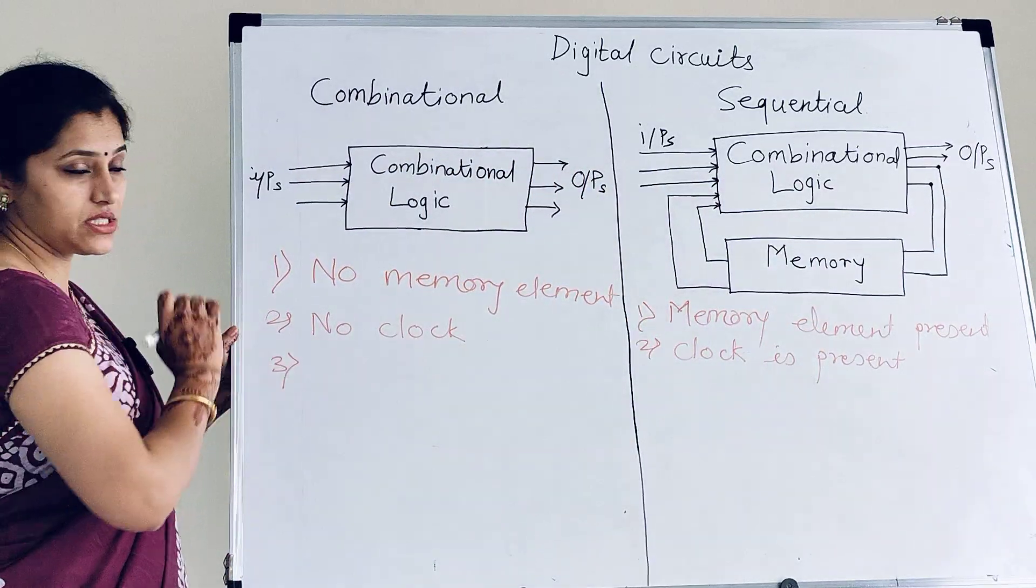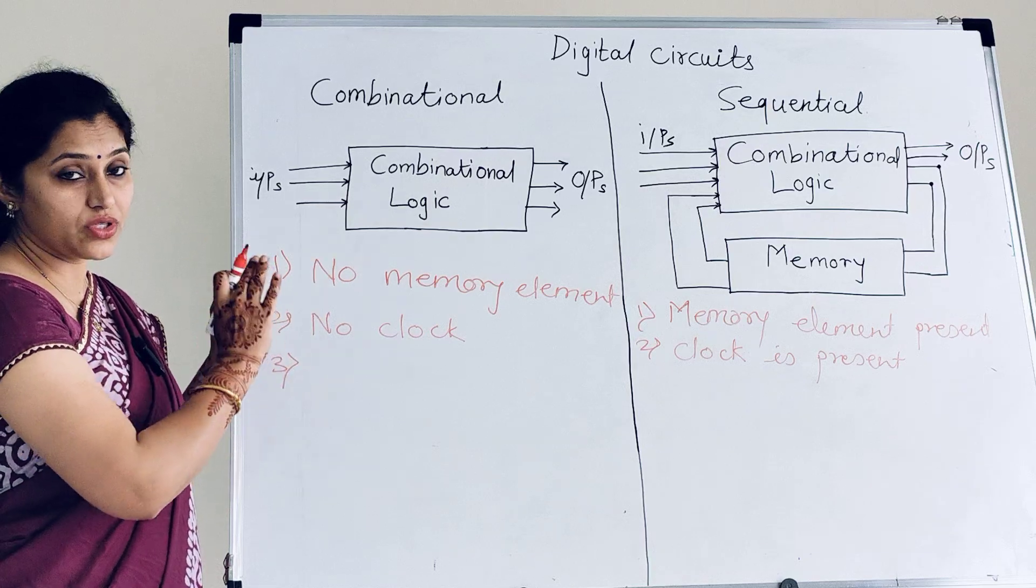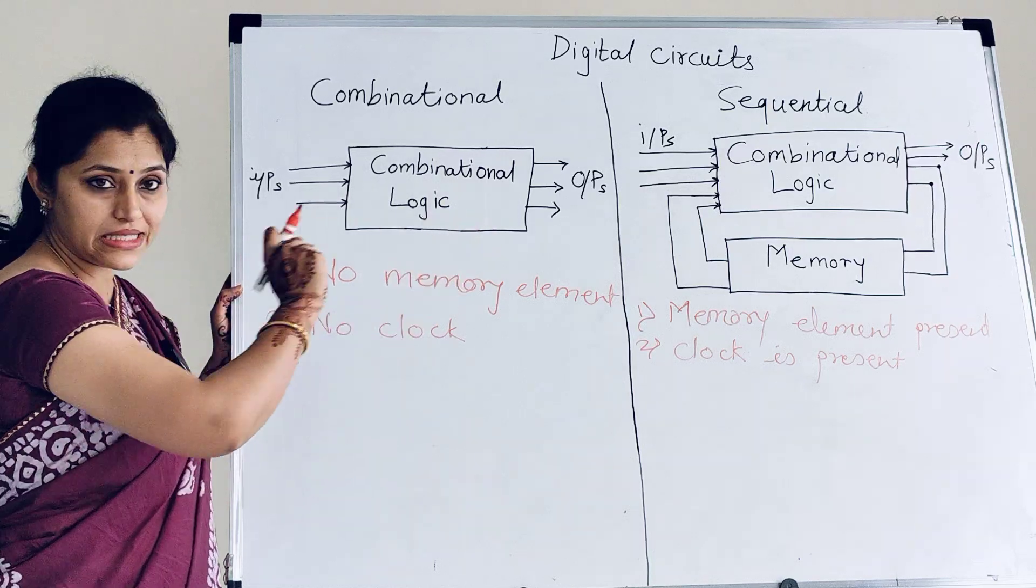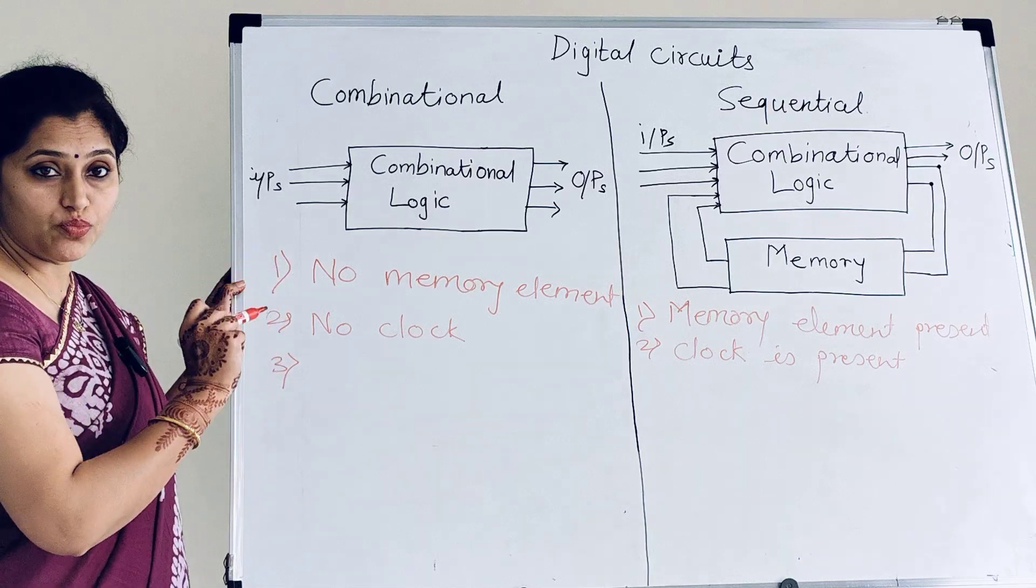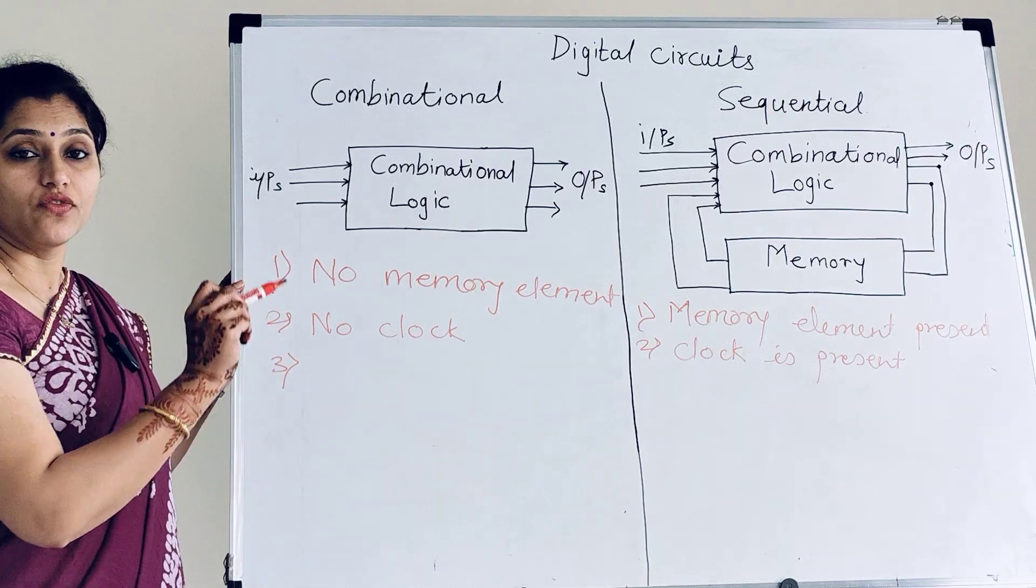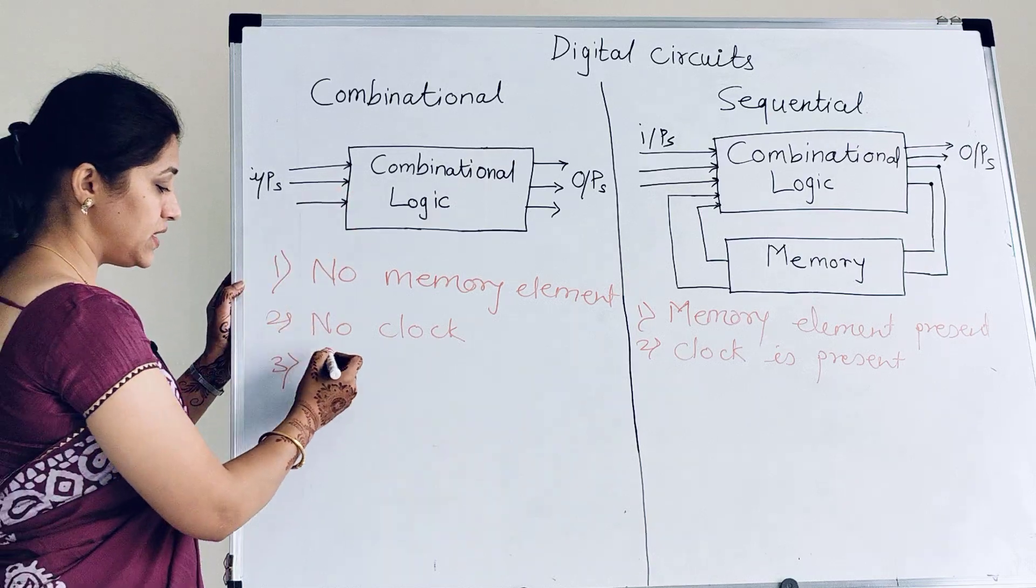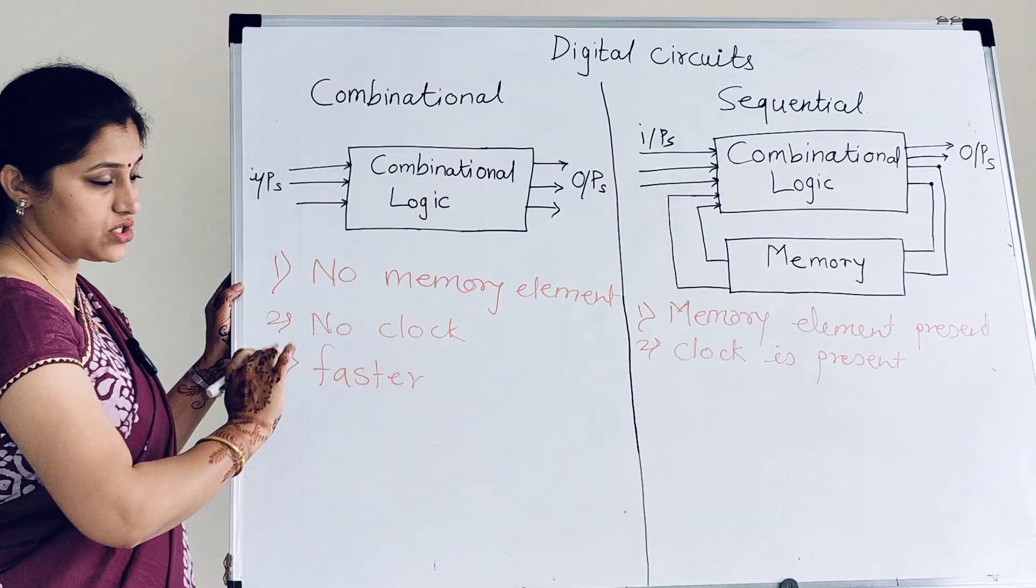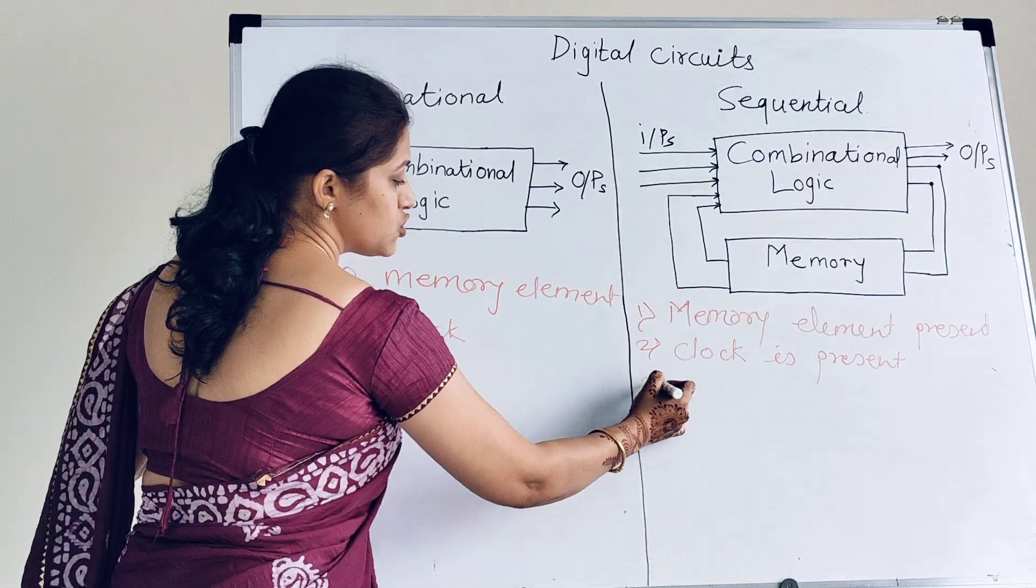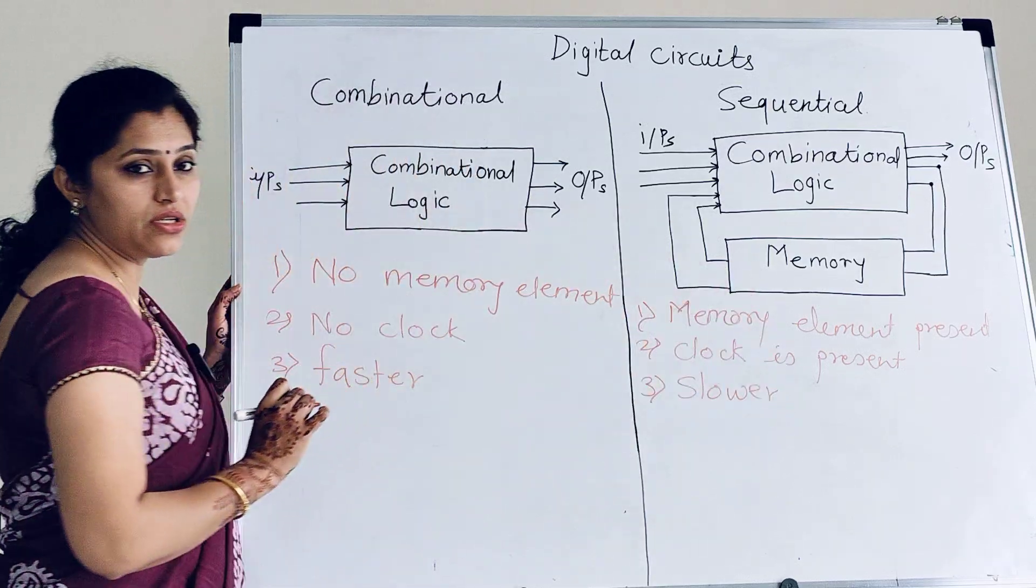Next difference is here, whatever inputs we apply, we get outputs, so they are faster. Whereas in case of sequential circuits, output depends on previous output also. So we need to wait for clock, so that after clock we will get previous output. So they are faster as compared to sequential circuits. And they are slower as compared to combinational circuits.